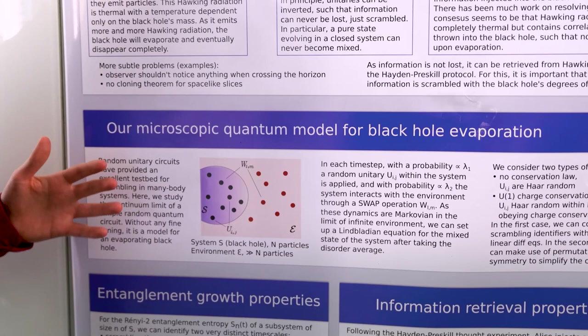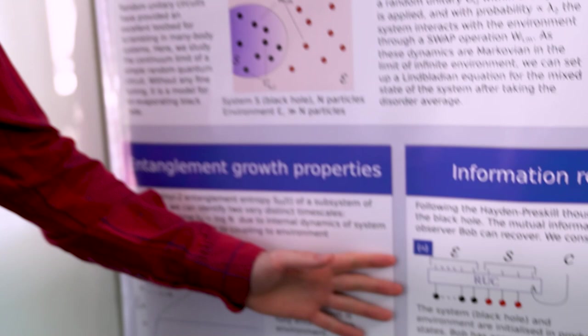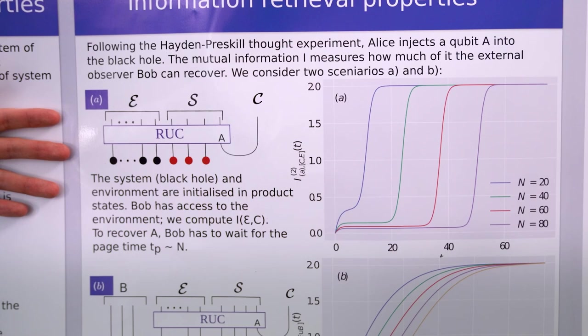What we did in this project is we invented a new microscopic quantum model that has some of the features you expect from black holes. Then for this model, we computed the time needed for scrambling of quantum information. We also calculated how long you need to wait until the Hawking radiation reveals whatever you have thrown into the black hole.